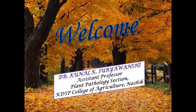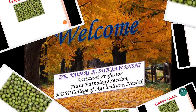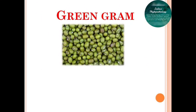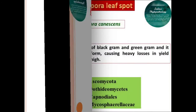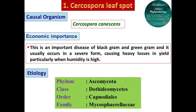Today we are going to see the diseases of green gram and black gram and their management. First, we will see Cercospora leaf spot of beans, which causes disease to all bean crops — soybean, green gram, and black gram. Its causal organism is Cercospora canescens. This is an important disease of black gram and green gram, and it usually occurs in severe form causing heavy losses in yield, particularly when climatic conditions are most favorable.